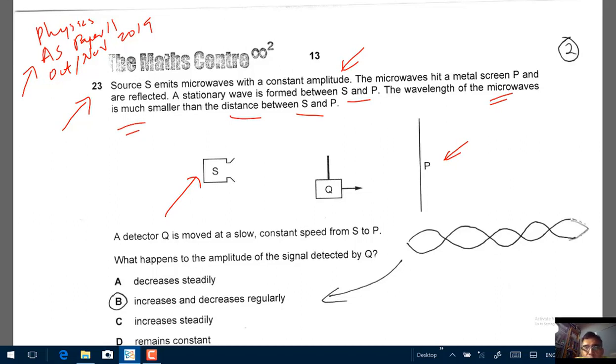So before we do anything else, I have drawn a typical picture of a stationary wave here. We have a source emitting a wave, it is reflected, a stationary wave is formed, and the wavelength is smaller than the distance between S and P. So here I have a picture of a typical stationary wave.